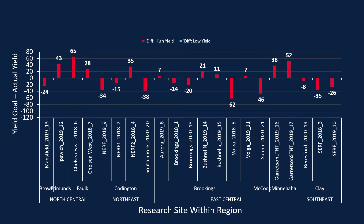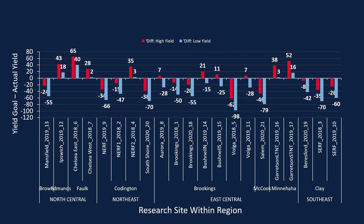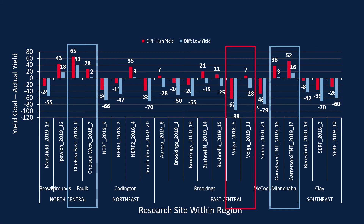Using the high yield potential versus the low yield potential, we see that for the most part across these sites the high yield was better. Looking specifically at the Volga 2018-2019 site, when we used the low yield we actually underestimated yield potential even more, because we had really good growing conditions there. Comparing against the Garretson sites, using the low yield potential was actually a good idea because it made recommendations more accurate — we got closer to zero, more accurate to actual yields.